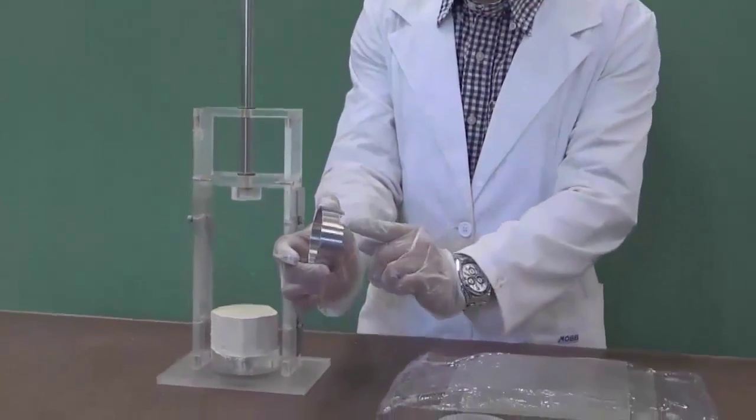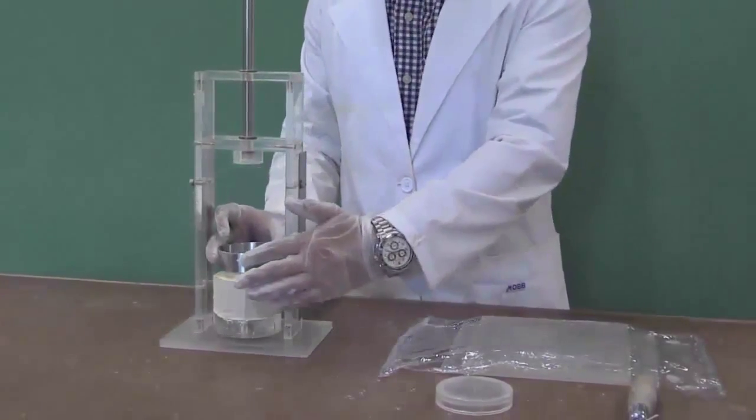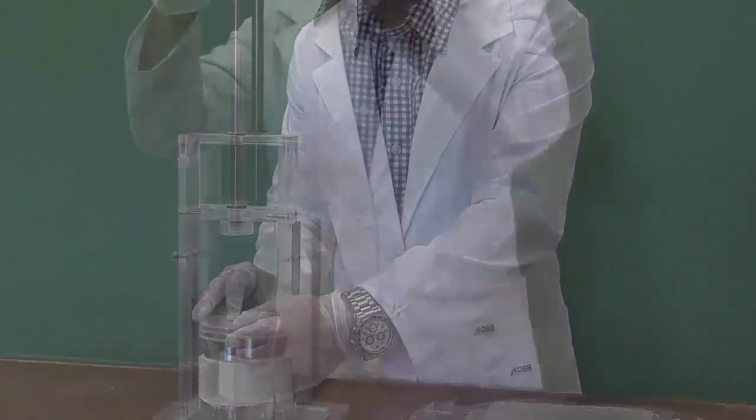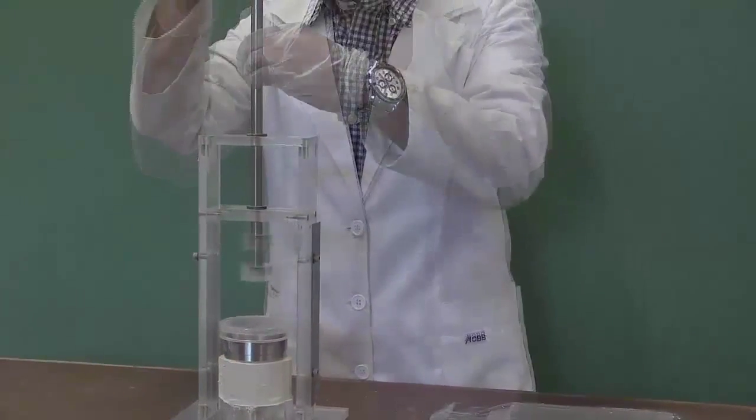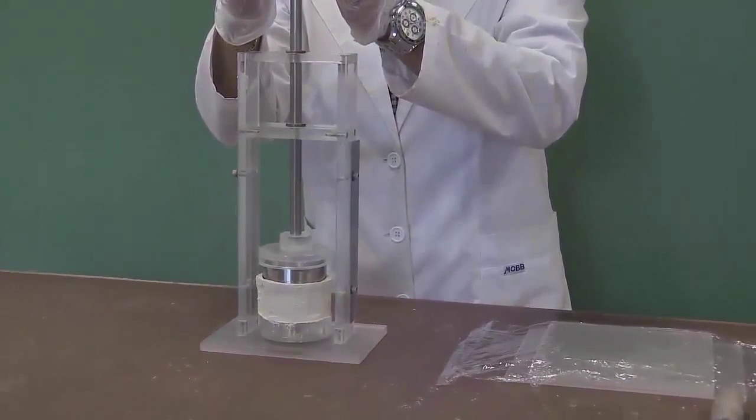Carefully position the ring with the sharp cutting edge on the sample and place the recessed plexiglass disc on top of the ring. Push down with the soil lathe ram until a sufficient height of the soil sample emerges out into the recess of the plexiglass disc.